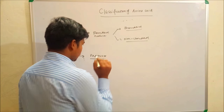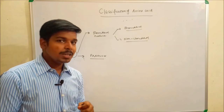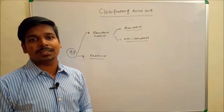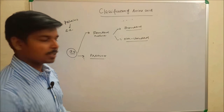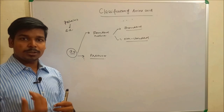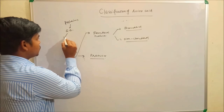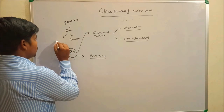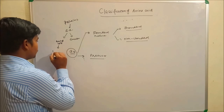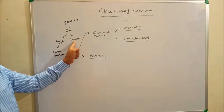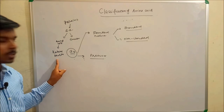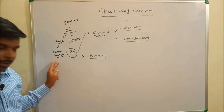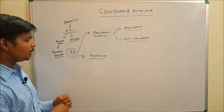A fifth classification is based on metabolic precursor. When amino acids are used for energy generation, they can either form glucose (glucogenic) or form acetyl-CoA and ultimately ketone bodies (ketogenic), or they can do both. So amino acids can be glucogenic, ketogenic, or glucoketogenic.